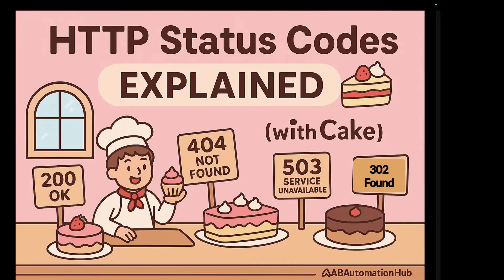That's how HTTP status codes work in the real world. Today we understood them using a bakery example. To recap: 2XX is the success status code family, 3XX means redirection, 4XX is client errors, and 5XX is server errors. That's it for today's video — I hope you liked it. Please like, share, and subscribe to my channel if you haven't already. Keep watching AV Automation Hub for more such content. Thank you so much and I'll see you in the next video.